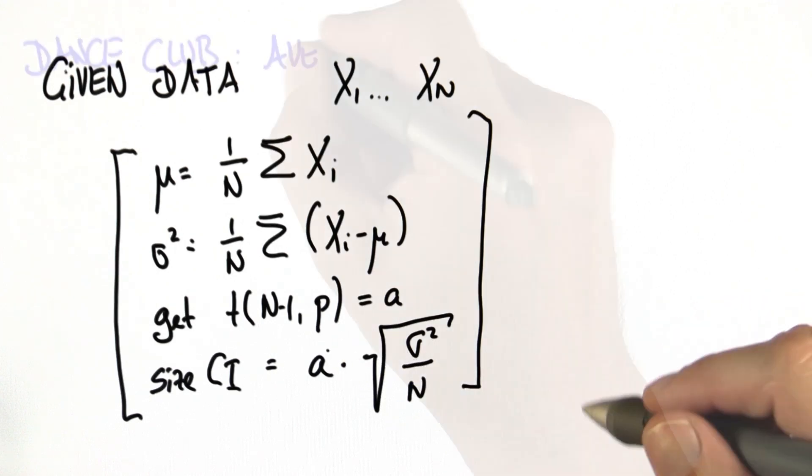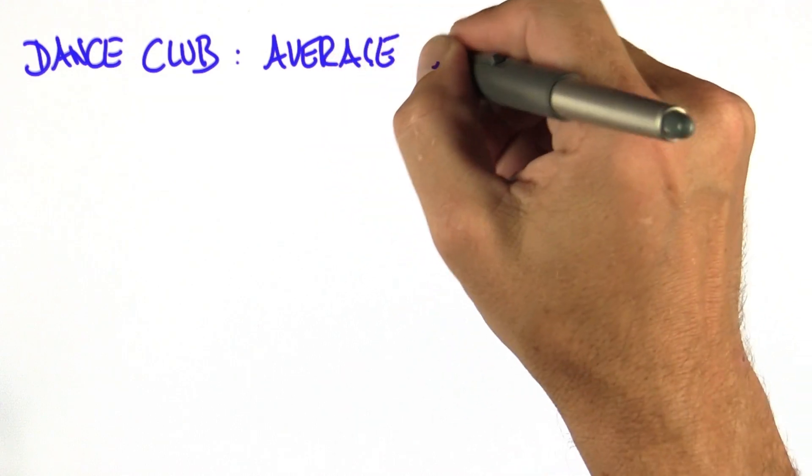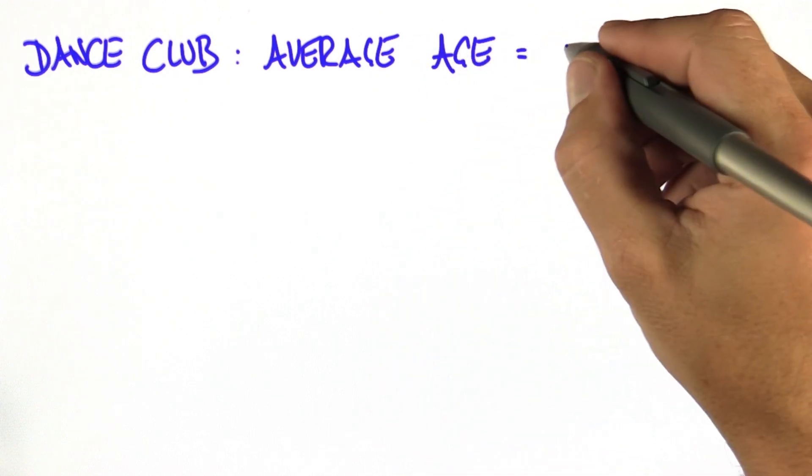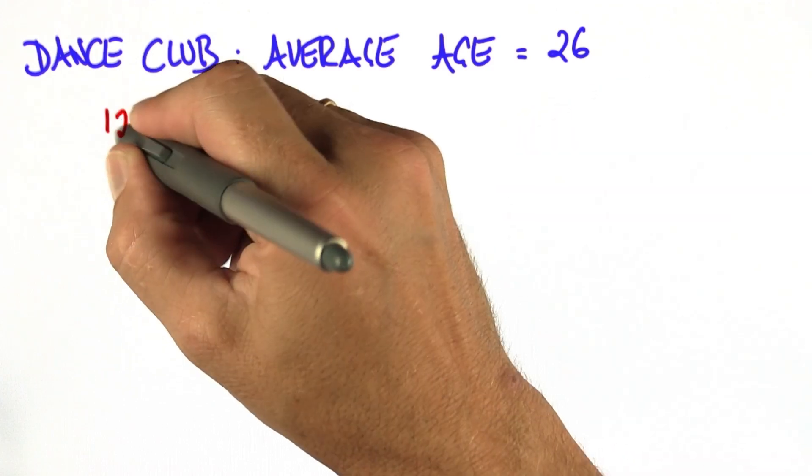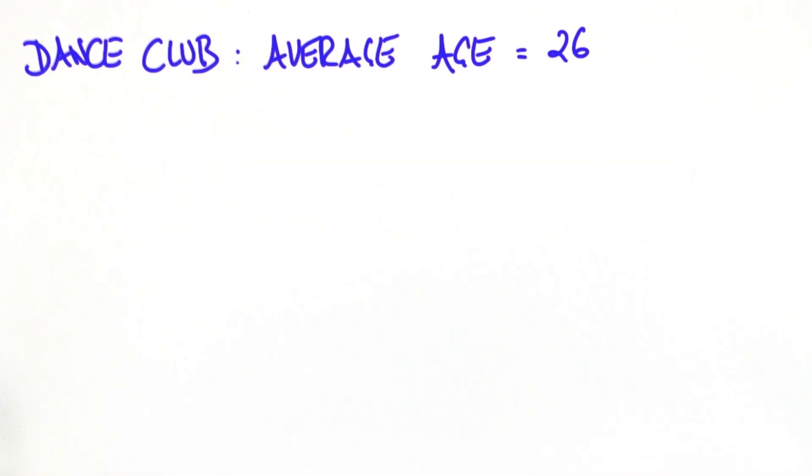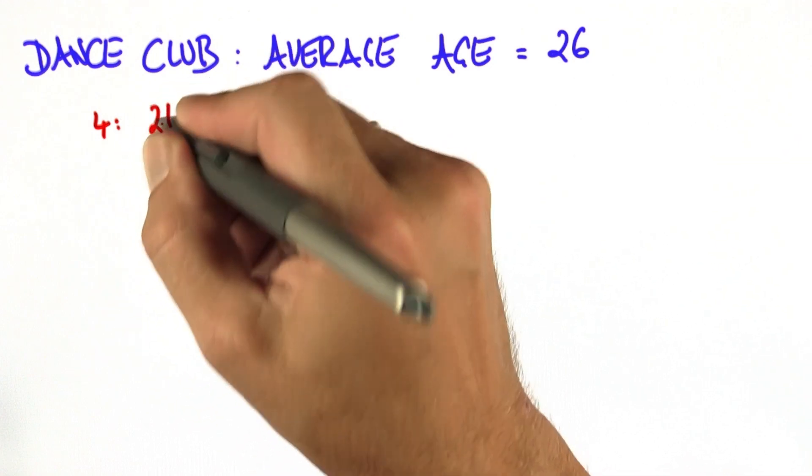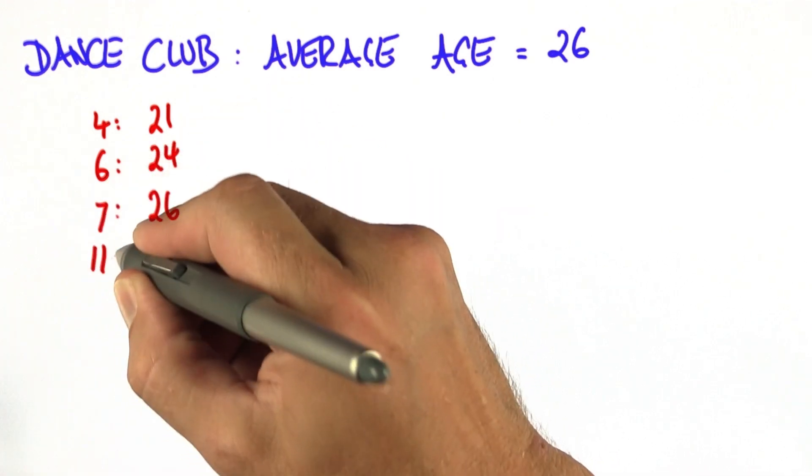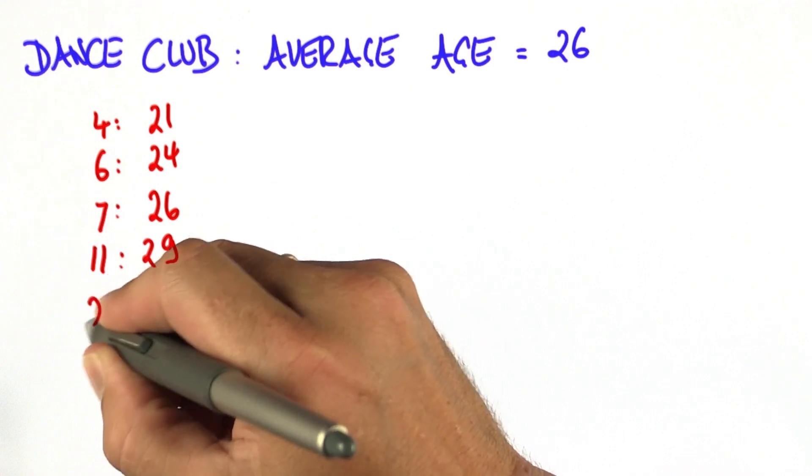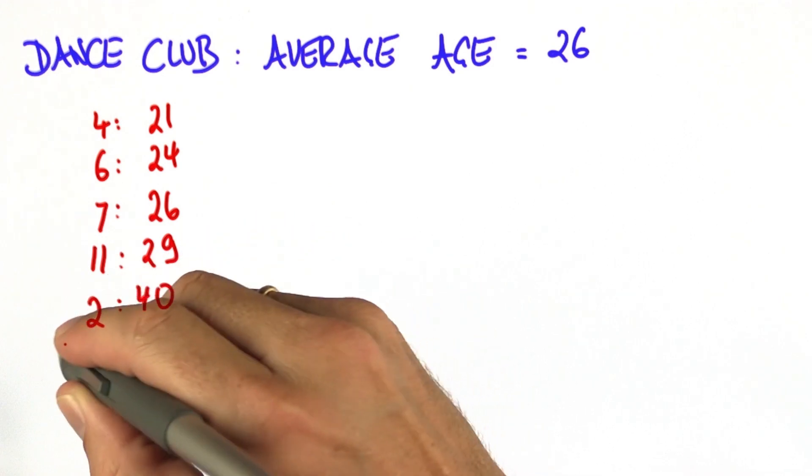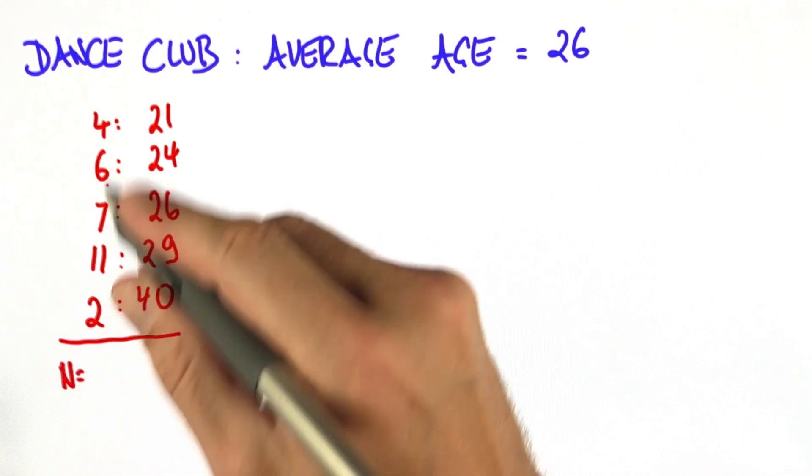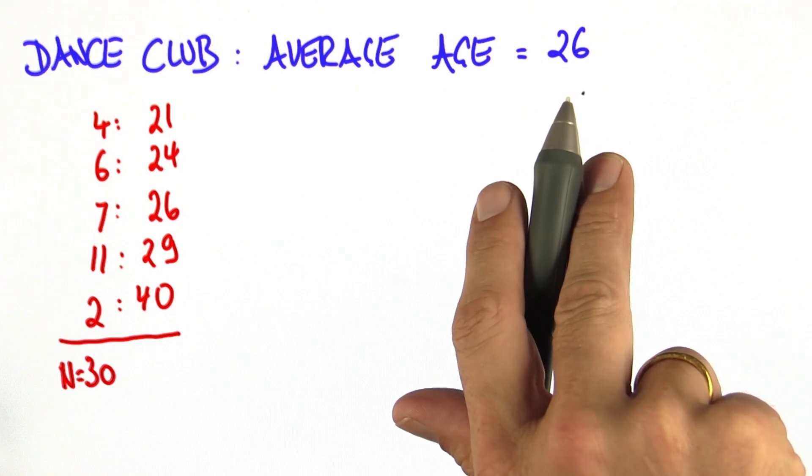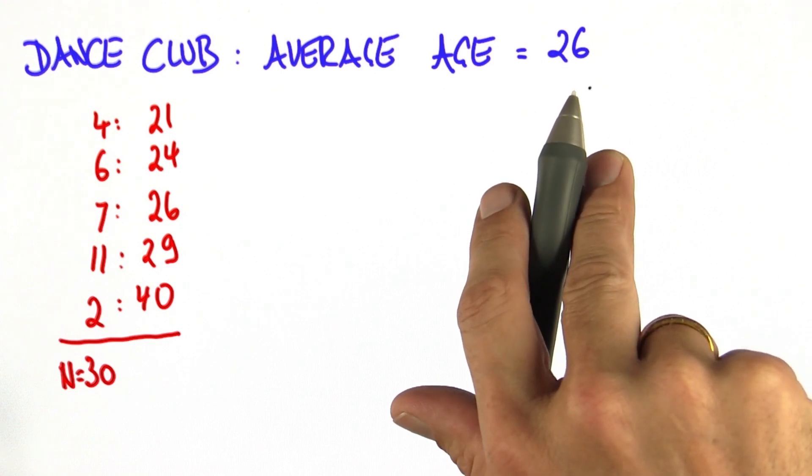So let's put this into action. A dance club operator advertises the fact that the average age of its client is 26. You walk in and encounter the following people. Four people are 21, six people are 24, seven people are 26, eleven people are 29, and two people are actually 40 years old for a total of n equal 30 people. Now, compute for me whether you now trust the statement that the average age is 26. And let's do so.